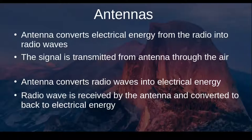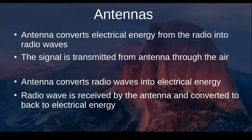An antenna also functions as a receiver. It converts radio waves traveling through the air and space back into electrical energy. That electrical energy is routed back into the radio and converted back to voice, Morse code, digital signals, or whatever the original signal originated as.